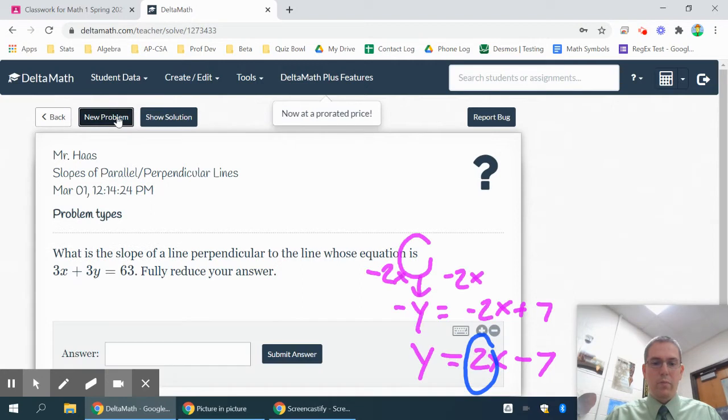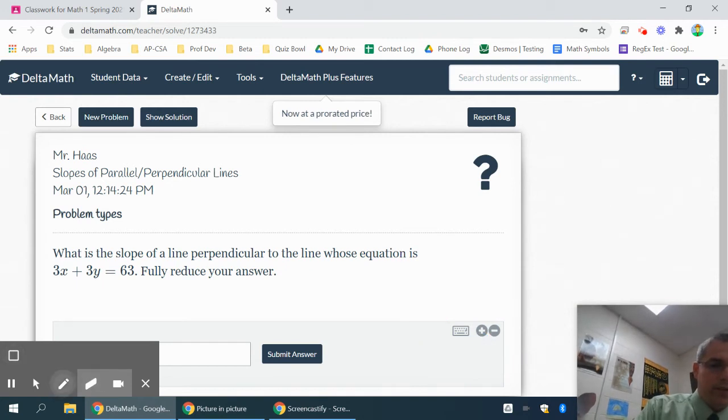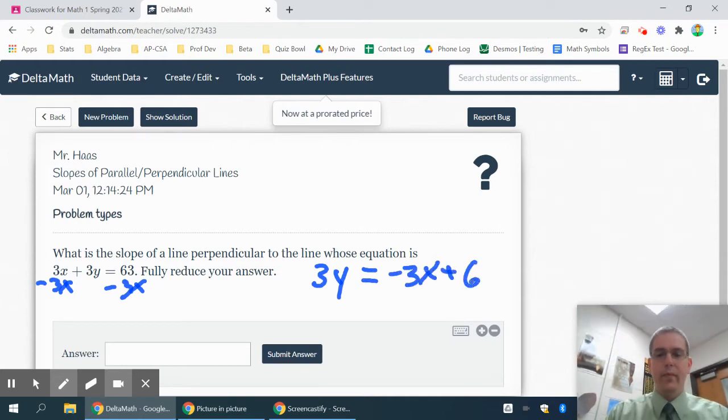If I would have wanted, on this one it's asking for perpendicular, so once again I need to start by solving for y. So I'm going to subtract 3x from both sides. That's going to give me a 3y equals negative 3x plus 63.